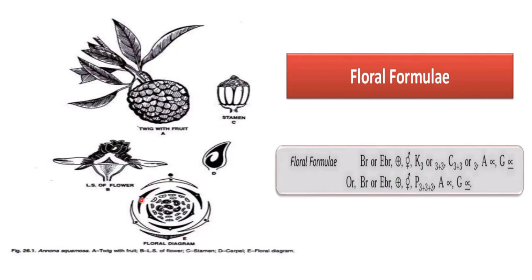Now this is the picture of the floral diagram. Here you can see the axis, bract, and whorls of sepals and petals. The floral formula shows bracteate or ebracteate, actinomorphic, bisexual; calyx 3 or 3+3 because sepals can be in 2 whorls — 2 whorls with 3 sepals each. Corolla: petals in 2 whorls with 3 petals each. Androecium infinite, gynoecium also infinite with superior ovary.